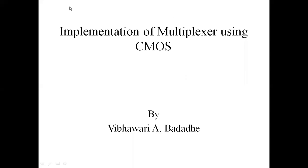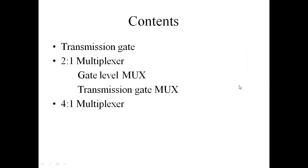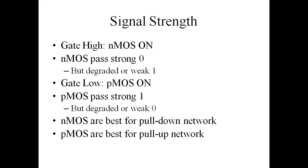Today we are going to discuss the implementation of the multiplexer using CMOS transistors. The contents include the transmission gate, the 2-to-1 multiplexer, implementation of the 2-to-1 multiplexer by gate level and by transmission gate, and then we will discuss the 4-to-1 multiplexer.